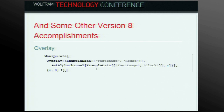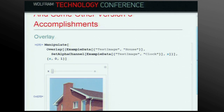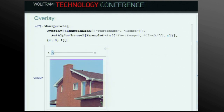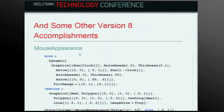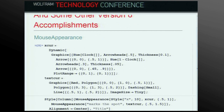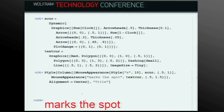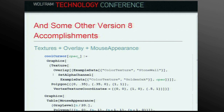One of my other favorite functions of version 8 that we worked on is Overlay, which allows you to overlay any number of objects for any purpose. In this case I'm using alpha channels to show two bitmaps overlaid over each other. Other favorites include MouseAppearance, which is fun and also useful. You can do all three at once if you want.